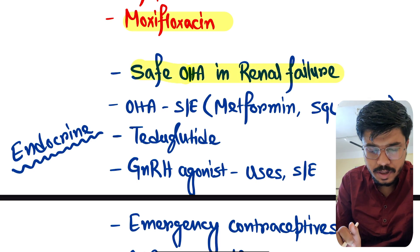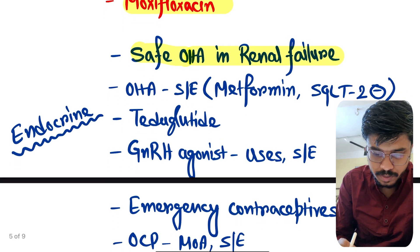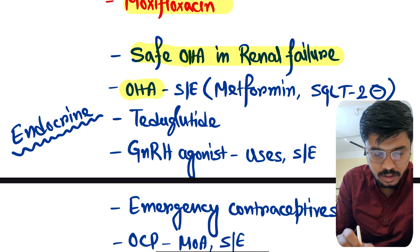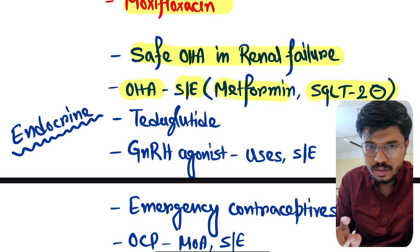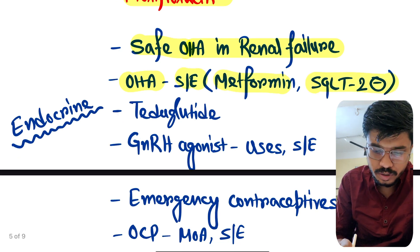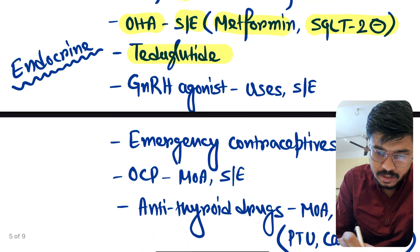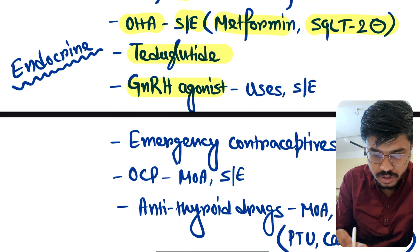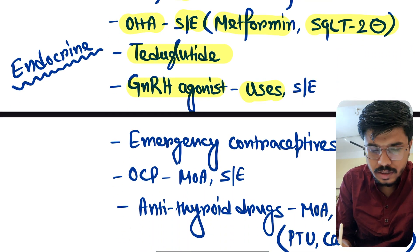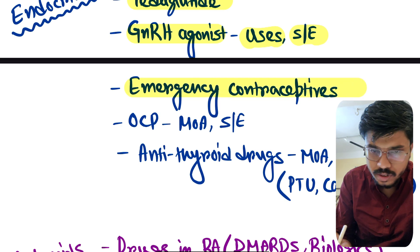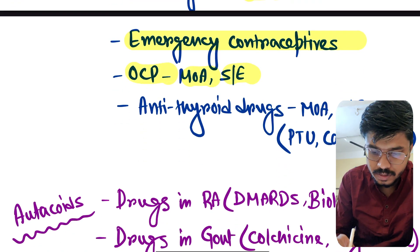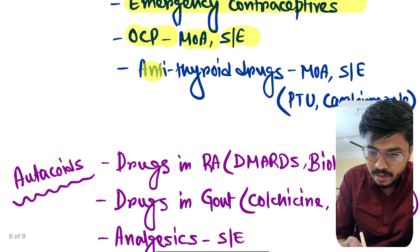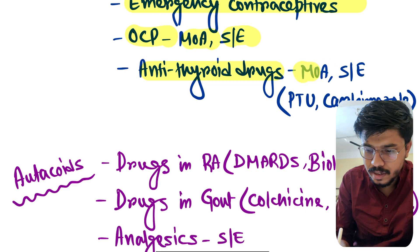From endocrine: safe oral hypoglycemic drugs in renal failure — important. Oral hypoglycemic agents' side effects, especially metformin. SGLT-2 inhibitors — again important. Thiazolidinediones, GLP-1 receptor agonists: uses and side effects. Emergency contraceptives. OCP mechanism and side effects.